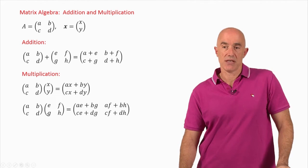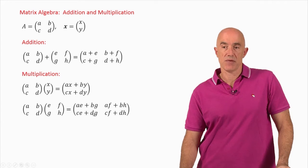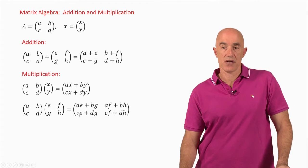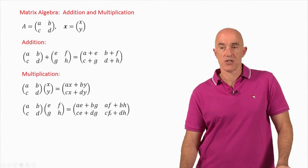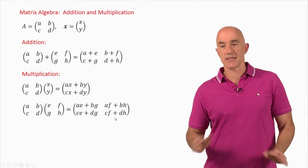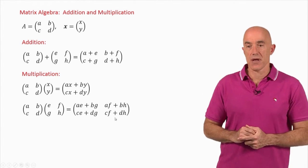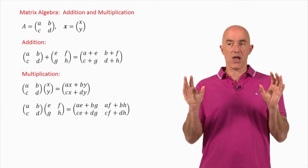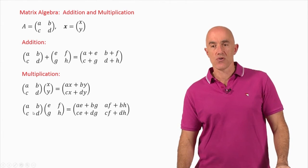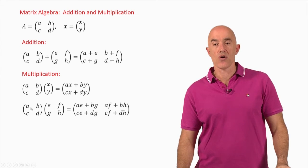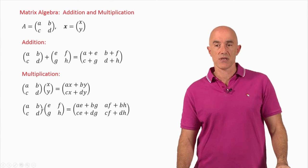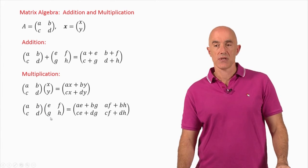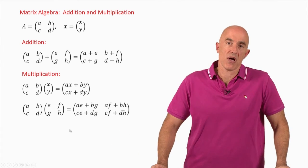Then we do C, D times E, G. That will give us C times E plus D times G, and that goes here. And then we go C, D times F, H. So C times F plus D times H, and that goes in this second row, second column element. So in multiplying matrices, you go across the rows in the first matrix and down the columns in the second matrix. And that's how you multiply.